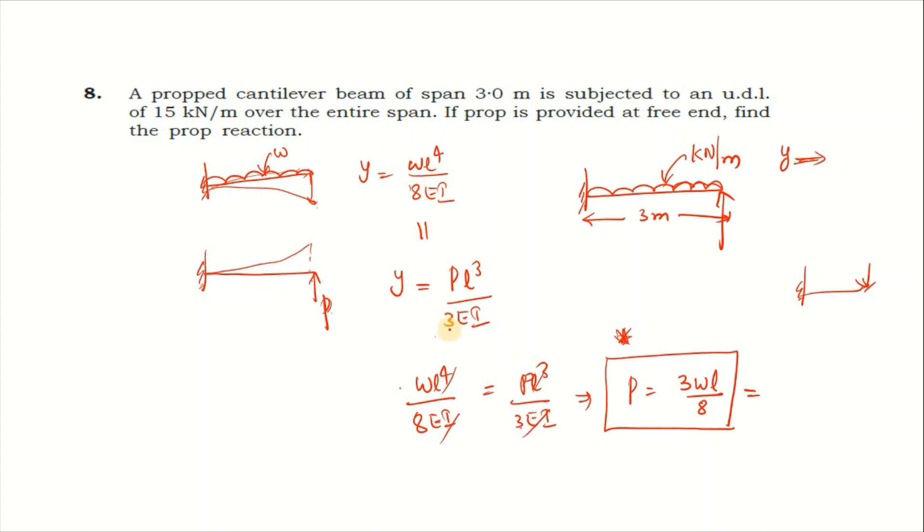Equate the two: WL⁴/8 = PL³/3. To balance, prop reaction P equals 3WL by 8. So P = 3 × 15 × 3 divided by 8 which gives 16.875 kN.